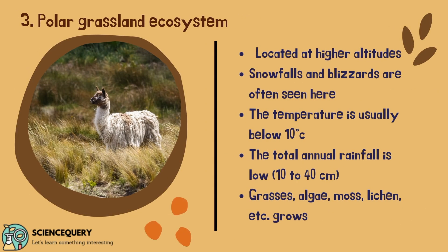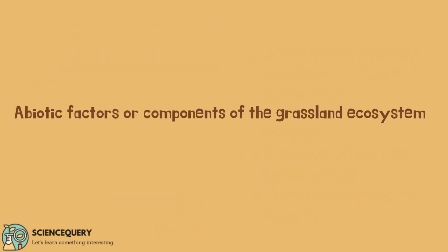The third type of grassland ecosystem is the polar grassland ecosystem. It is located at higher altitudes. Snowfalls and blizzards are often seen here. The temperature is usually around 10 degrees centigrade. The total annual rainfall is low, between 10 to 40 cm. Grasses, algae, moss, lichen, etc. grow in the polar grassland ecosystem.